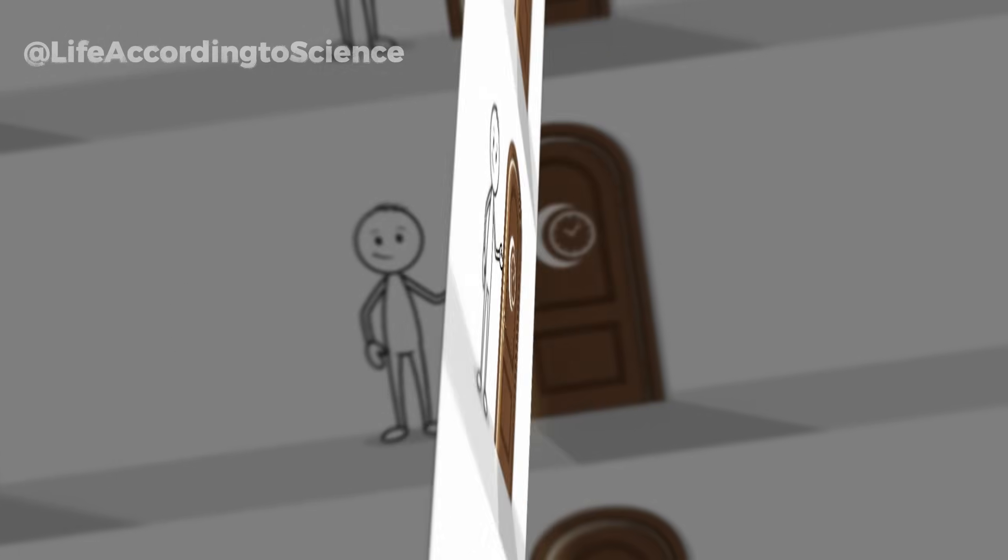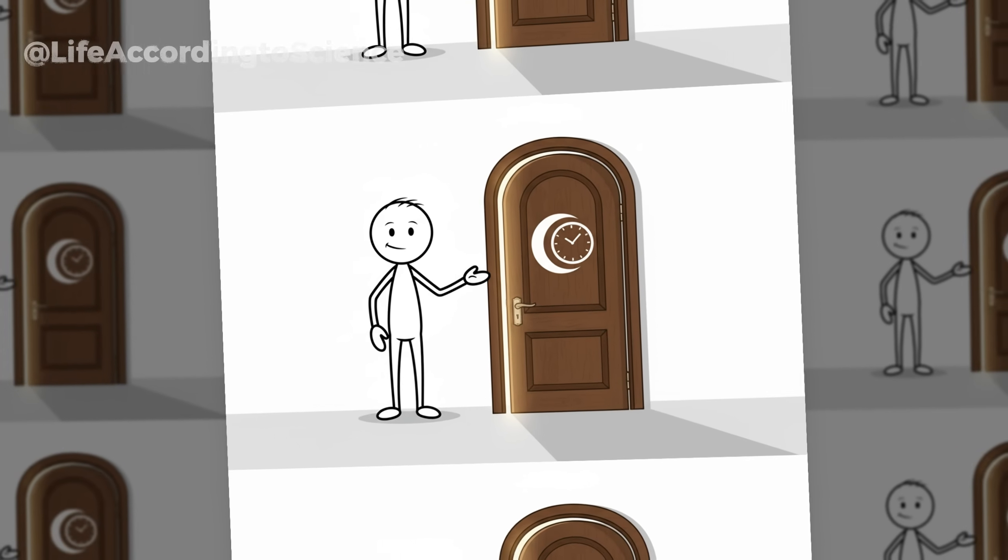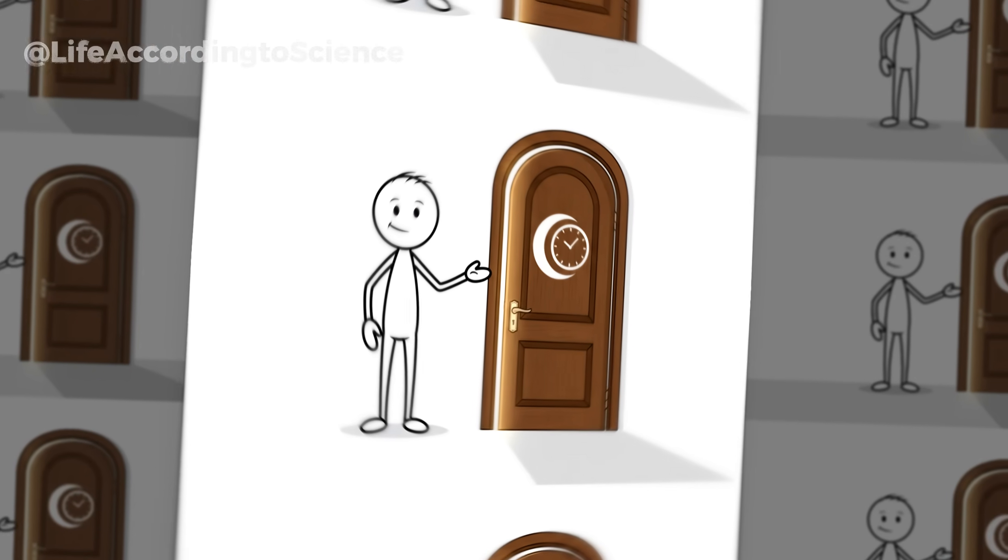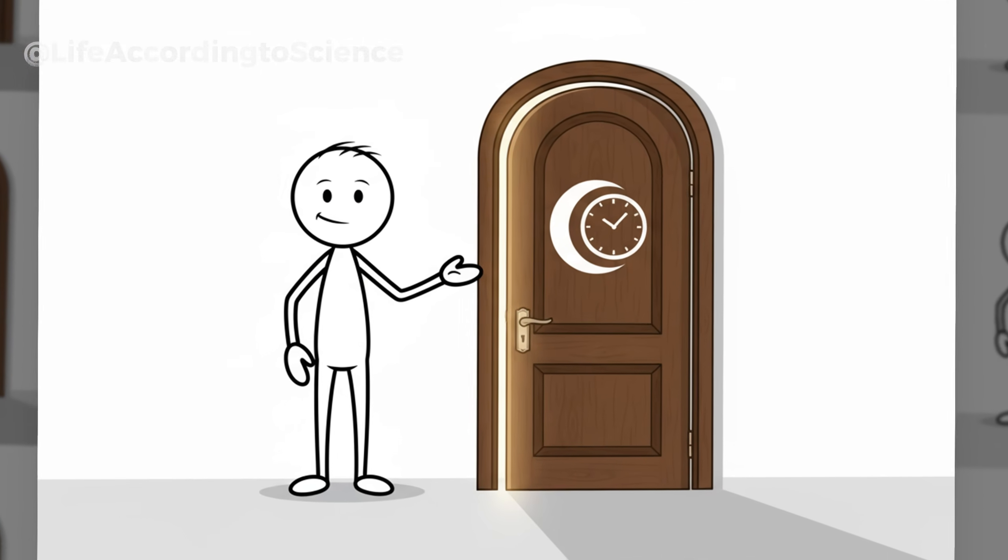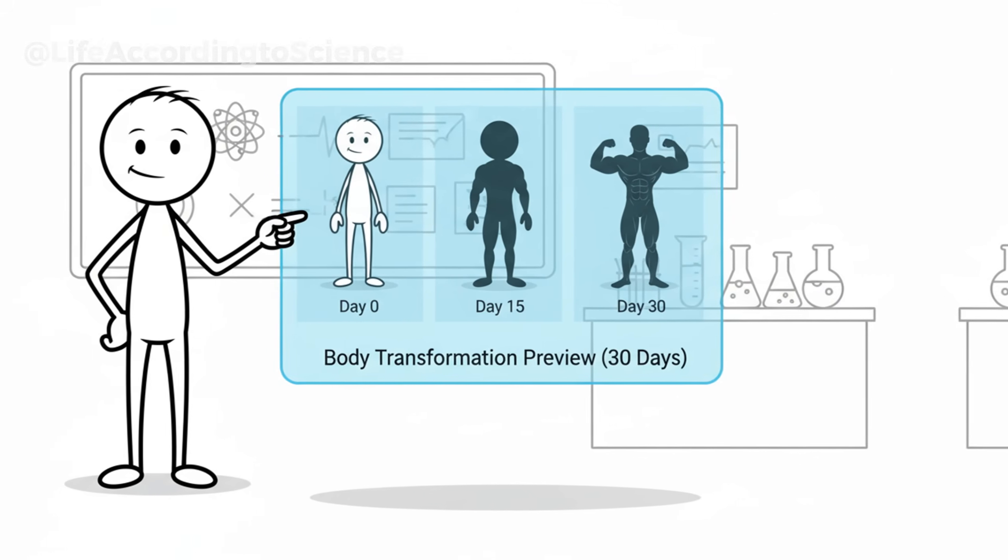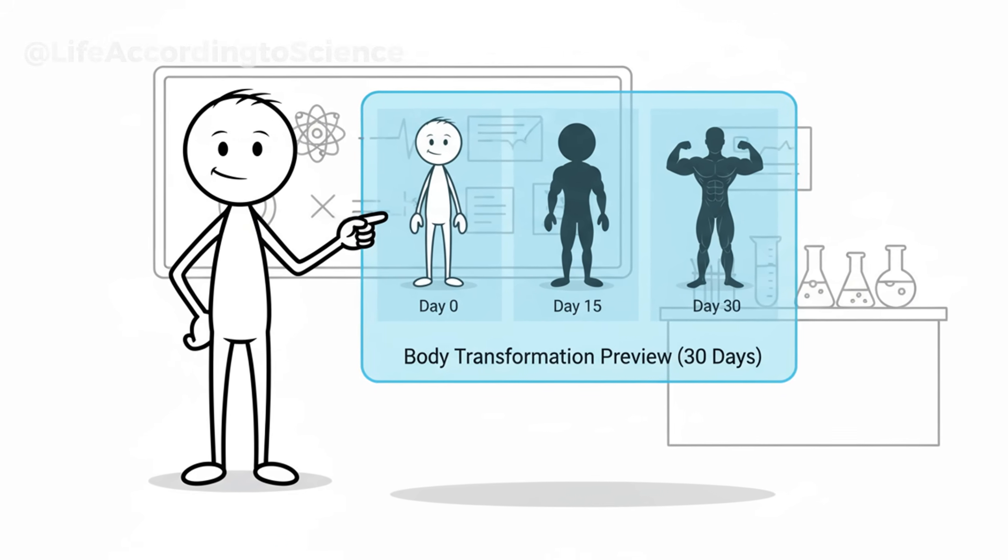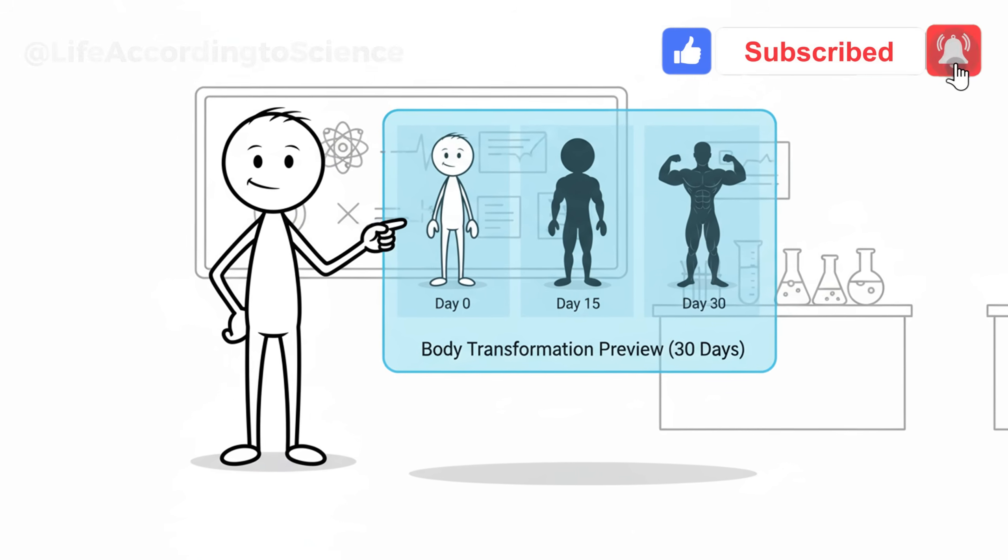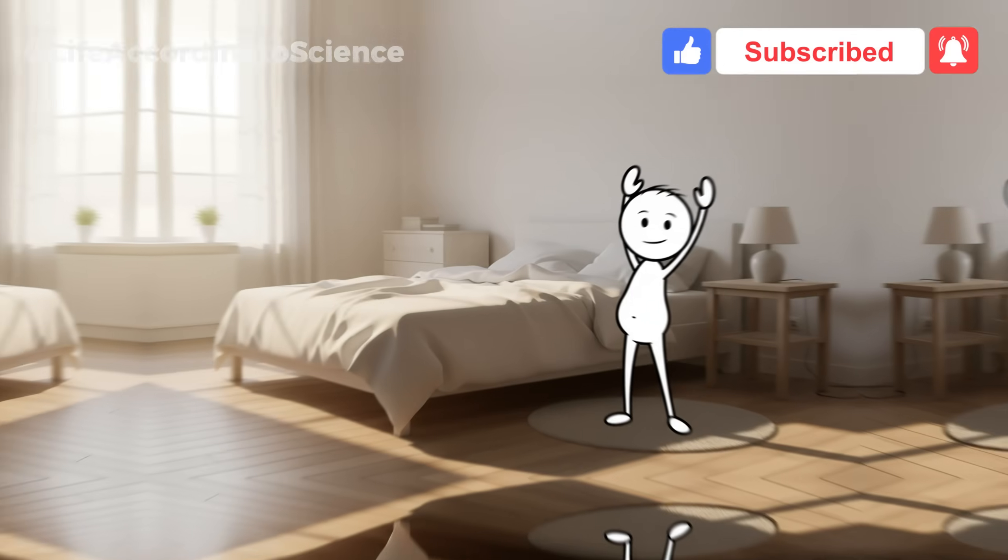If you've ever wondered whether fasting could finally unlock that stubborn belly fat, don't stop here. In the next video, I'll show you exactly what happens inside your body when you do intermittent fasting for 30 days, and why it might be the missing key your metabolism has been waiting for. Tap right here to watch what happens if you do intermittent fasting for 30 days, science explained, and see how your body transforms when you stop feeding it and start trusting it.